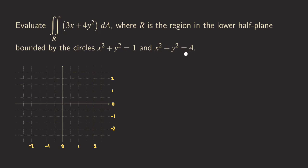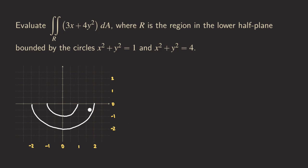When graphing, we only graph the portion of each circle that is below the x-axis. For the first circle, we graph from -1 to 1 along the lower semicircle. The second circle has radius 2, so we graph its lower semicircle as well. We don't draw anything above the x-axis. The region R is the area between these two lower semicircles — everything between the inner and outer circles in the lower half plane.